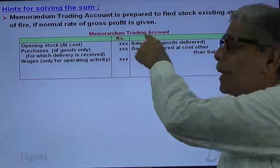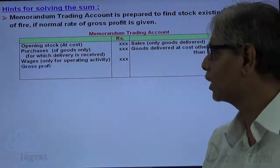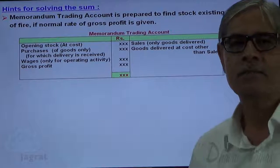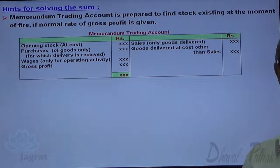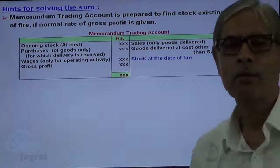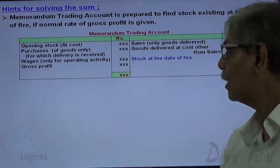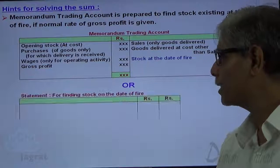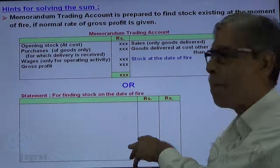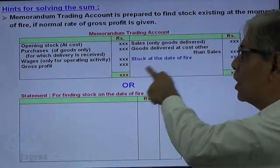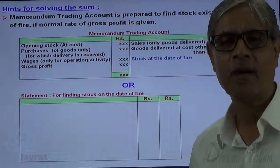Sales multiplied by the rate of gross profit available gives the gross profit. The total of the debit side minus the total of the credit side gives the difference — that is the stock at the date of fire. The same stock at the date of fire can also be worked out on the basis of a statement we can prepare. Instead of preparing a trading account, we can prepare a statement to find out the stock that existed at the date of fire.